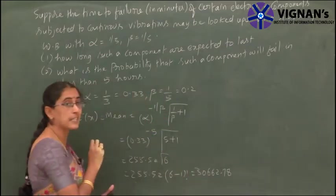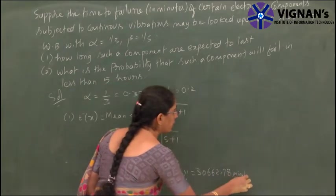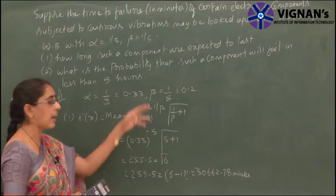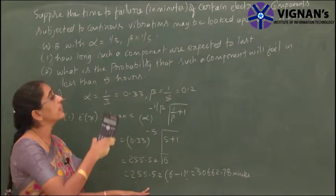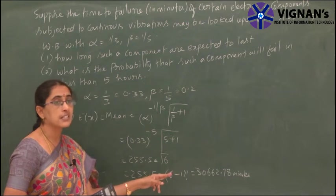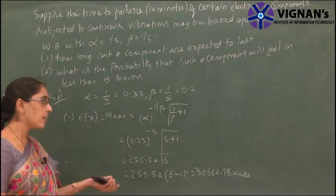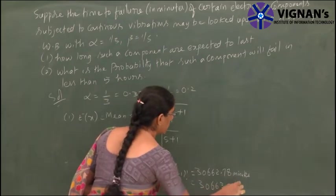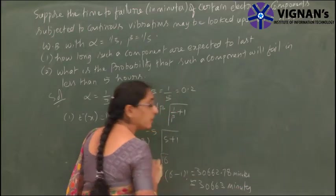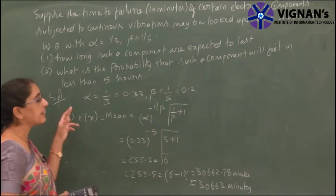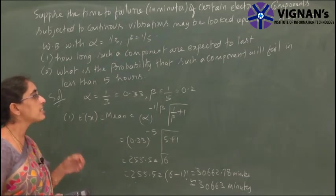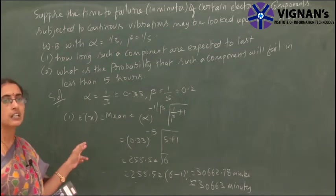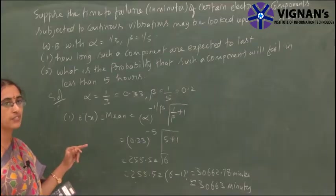This is in minutes because the data is given in terms of minutes. So the average life of the electronic component is 30,662.78 minutes, or approximately 30,663 minutes. That is the answer to the first part. The second part asks for the probability that such a component will fail in less than 5 hours. The Weibull distribution is defined from 0 to infinity.